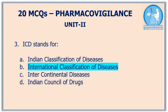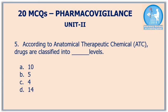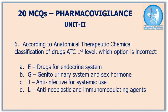Fourth question: main principles for ATC classification — the correct answer is option D, all above options are correct. Fifth question: according to anatomical therapeutic chemical, drugs are classified into how many levels — the correct answer is option B, five. In this system, drugs are classified into five different levels.